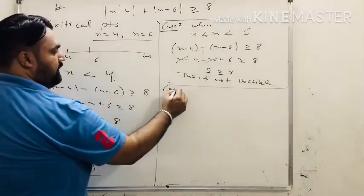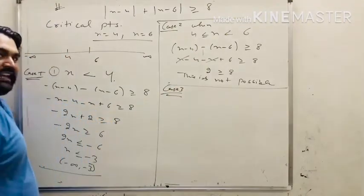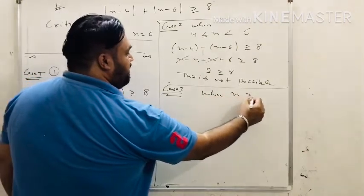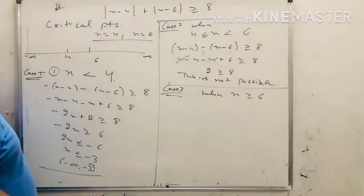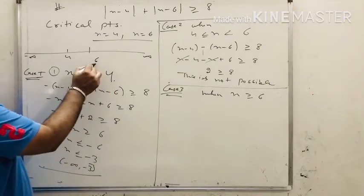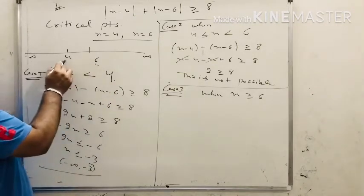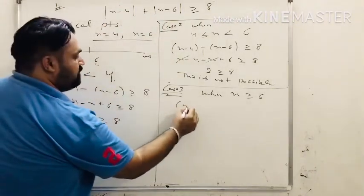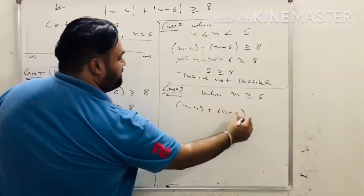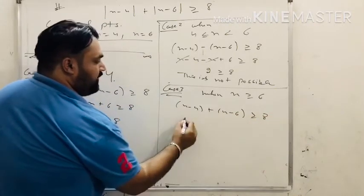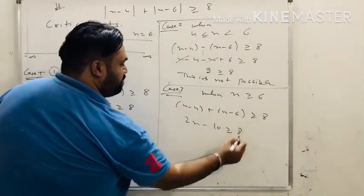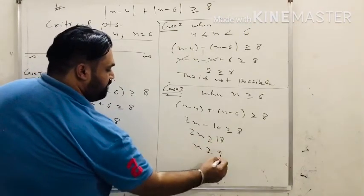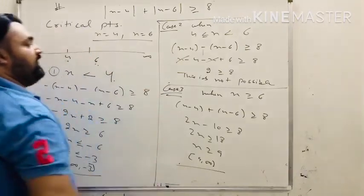Case 3: x is greater than or equal to 6. If x is greater than or equal to 6, it is also greater than or equal to 4, so both modulus values are positive. We get x minus 4 plus x minus 6 greater than or equal to 8. So 2x minus 10 greater than or equal to 8, giving 2x greater than or equal to 18, so x greater than or equal to 9. The interval is 9 to infinity.